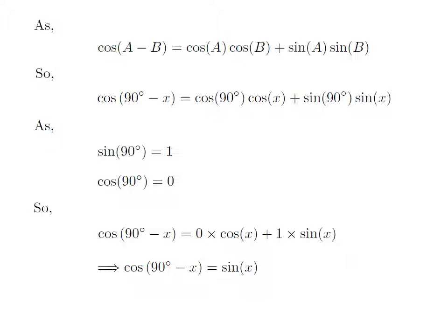As 0 into cosine of x is equal to 0 and 1 into sine of x is equal to sine of x, cosine of 90 degree minus x is equal to 0 plus sine of x, which is equal to sine of x. So, the value of cosine of 90 degree minus x is equal to sine of x.